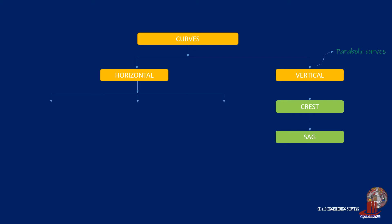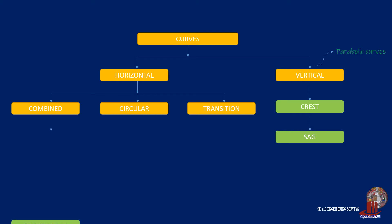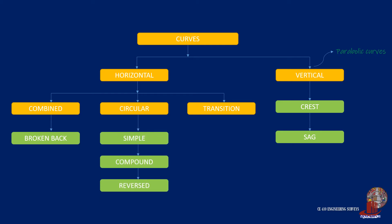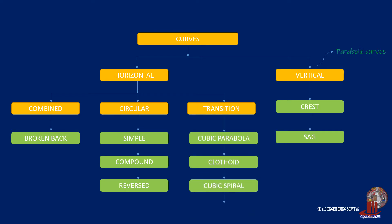On the other hand, horizontal curves are further classified into three: combined curves, circular curves, and transition curves. Broken back curves are combination of curves and tangents. Circular curves are categorized as simple, compound, and reverse curves. Transition curves has cubic parabola, clothoid, cubic spiral, and lamini scale.